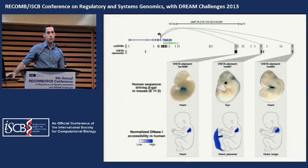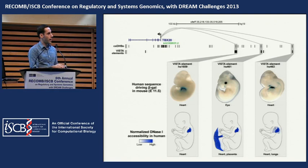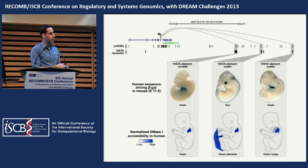Another example is TBX20, a transcription factor involved in heart development. These three VISTA elements overlapping our DHSs linked to the activation of TBX20 are highly active in heart in the fetus, and two out of three are active in the heart in mouse. Interestingly, TBX20 does have a role in eye development, so one element is expressed in the eye here but in the heart in human.